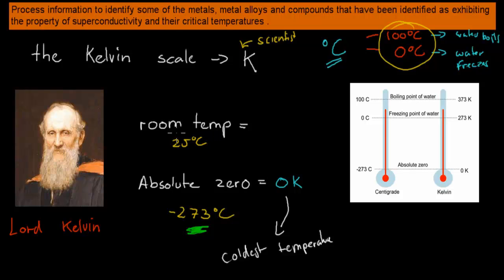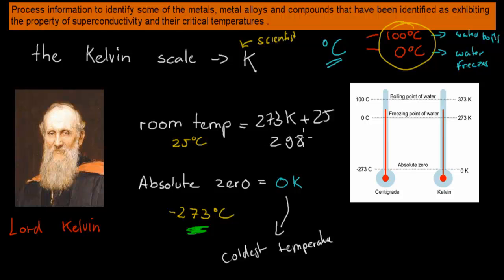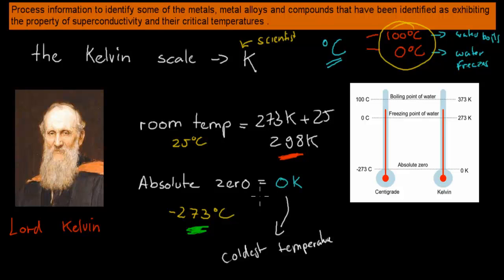So if we talk about really really cold, zero Kelvin is really really cold. Zero degrees Celsius feels cold, but zero Kelvin is actually completely cold. Room temperature of about 25 degrees Celsius would be 273 plus 25, which is 298 Kelvin. So 298 Kelvin is room temperature, roughly 300 Kelvin. Zero Kelvin is not the same as zero degrees Celsius — that's minus 273 degrees Celsius.